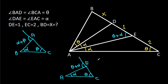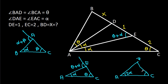In triangle ADC — with vertices A, D, C — the angle at D involves alpha plus alpha which will be 2 alpha, and with angle theta at A, this angle will be theta minus 2 alpha.